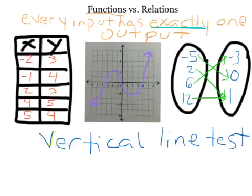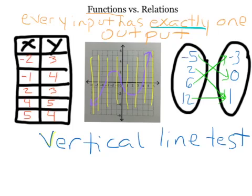The vertical line test only works with graphs — it doesn't work with tables, mapping diagrams, or sets of ordered pairs. What we do is draw a vertical line on the graph. If that vertical line touches the graph in more than one place, then it is not a function. Right now, all of the vertical lines I'm drawing are only touching the graph in one place, so all of these inputs have only one output — it's passing the vertical line test, which means all of these are functions.